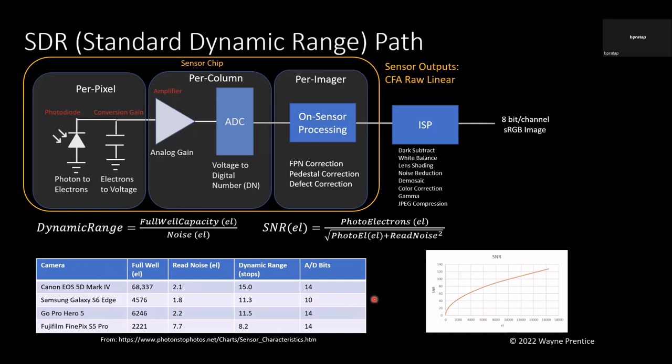I have two questions. First, I see you converted full well capacity to stops — how did you do that? And second, I have a question regarding the conversion gain in the pixel. I find it very difficult to understand — there's low conversion gain and high conversion gain — but how is it done in the actual pixel with the same set of transistors? How do you change the number of electrons available for a low or high conversion gain?